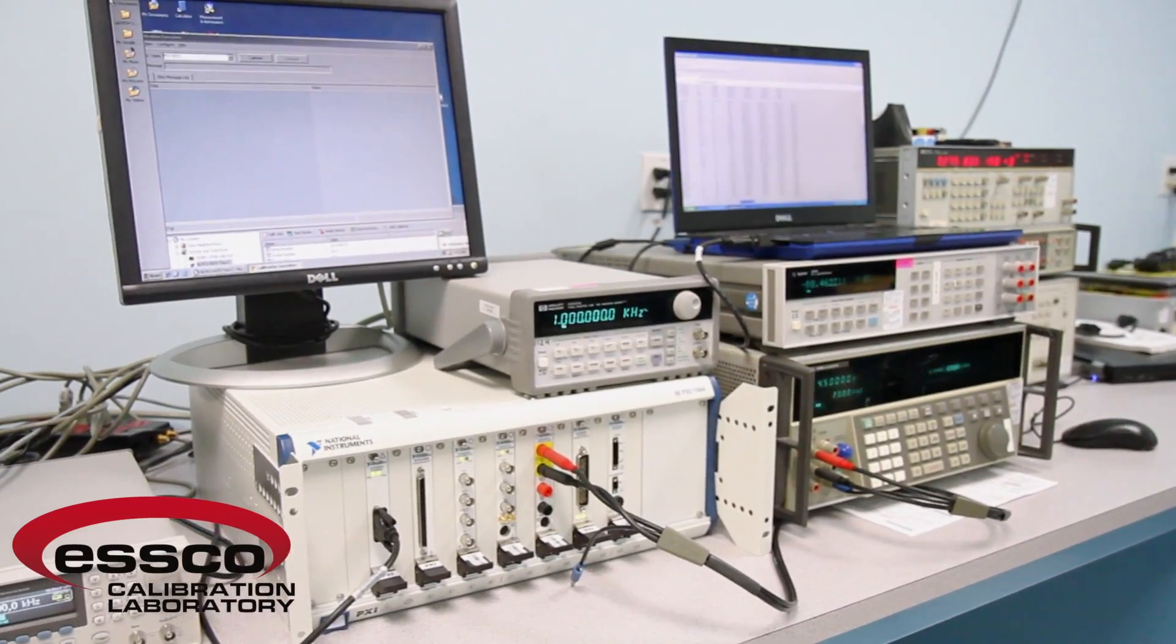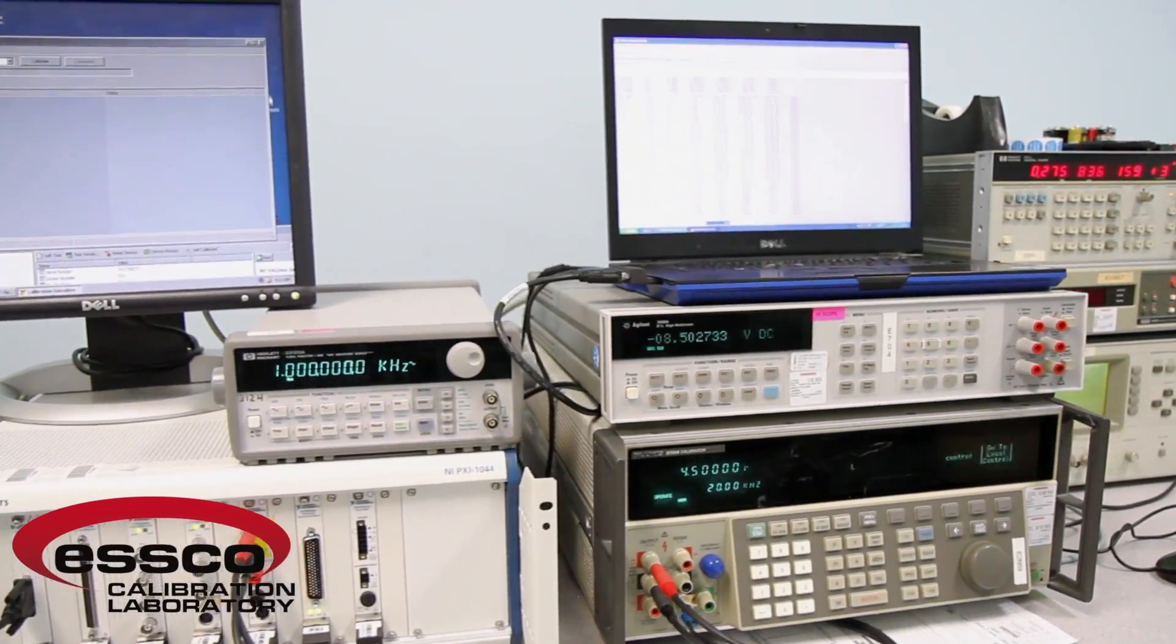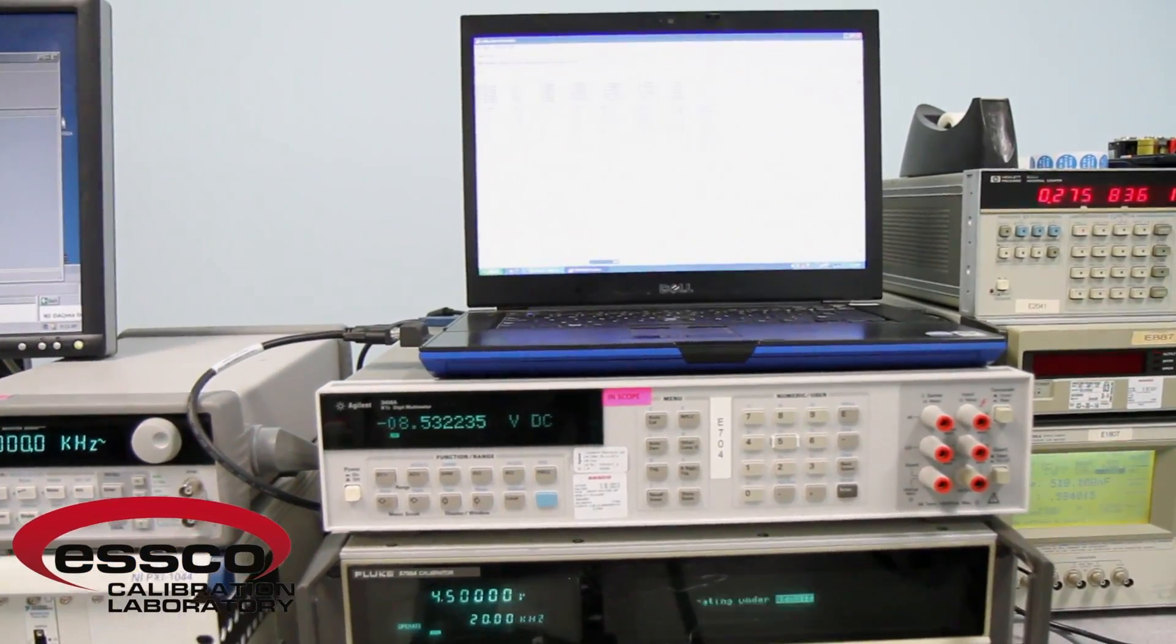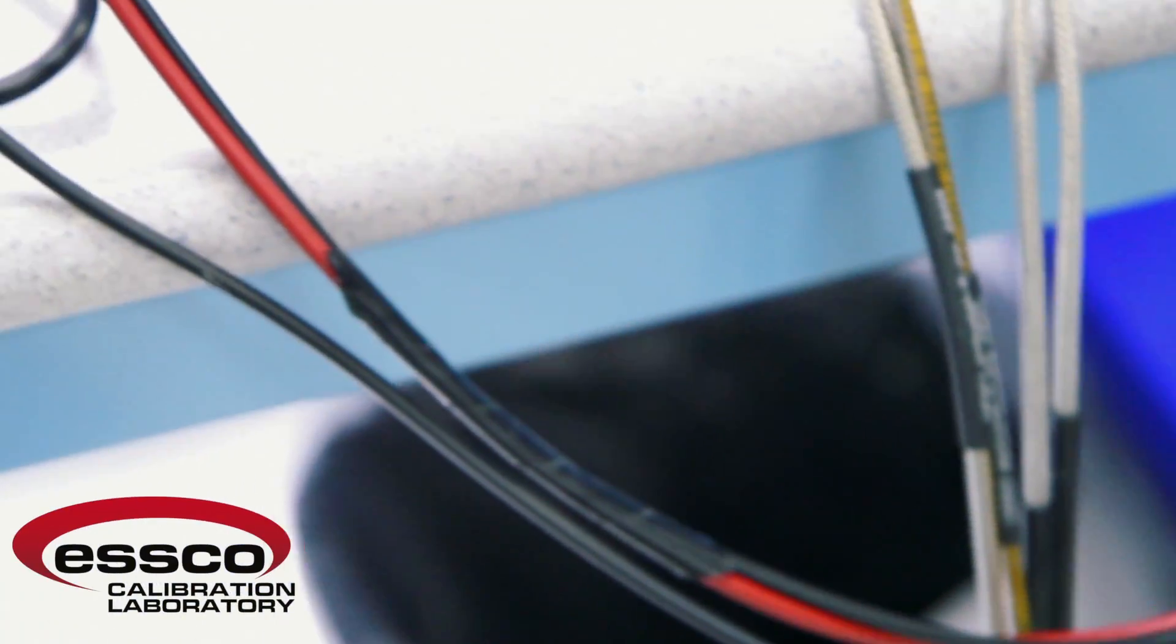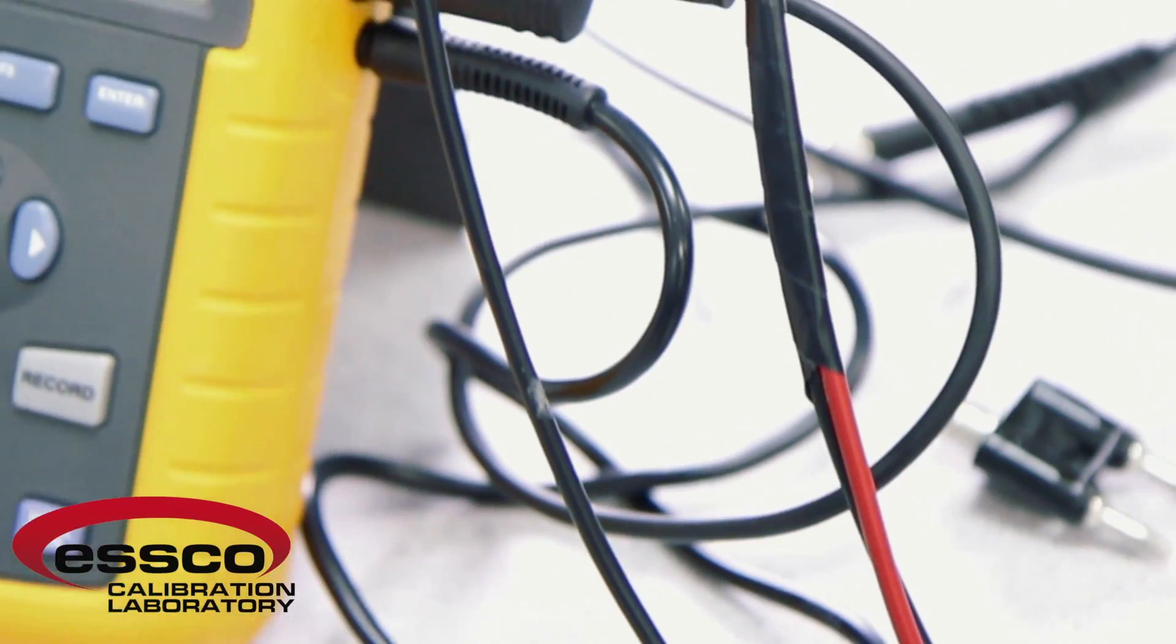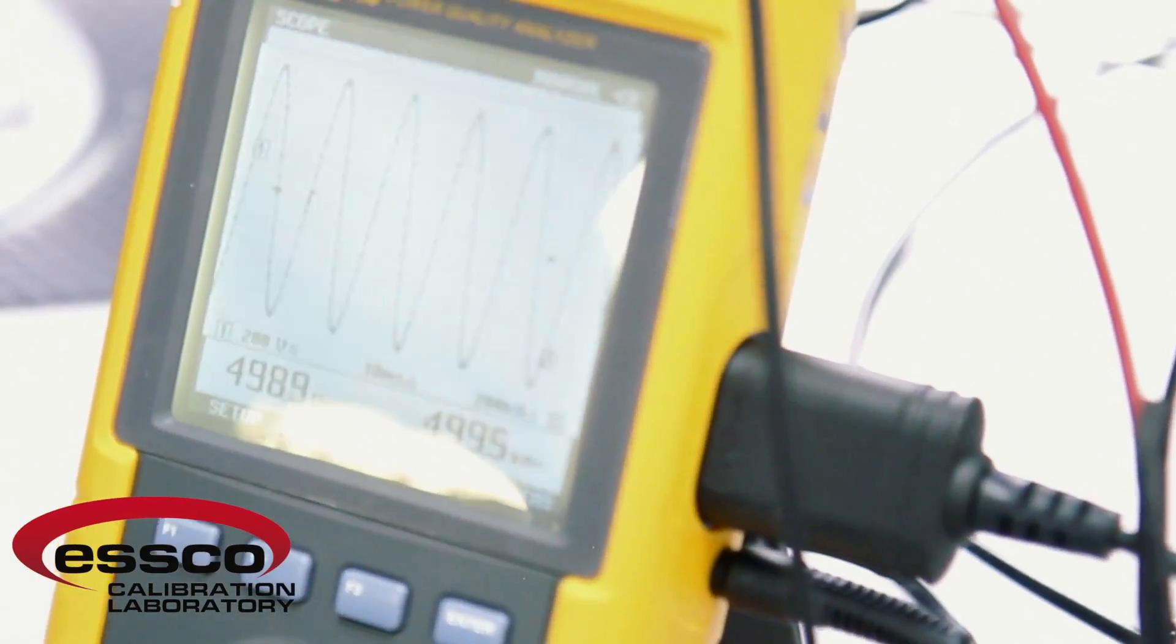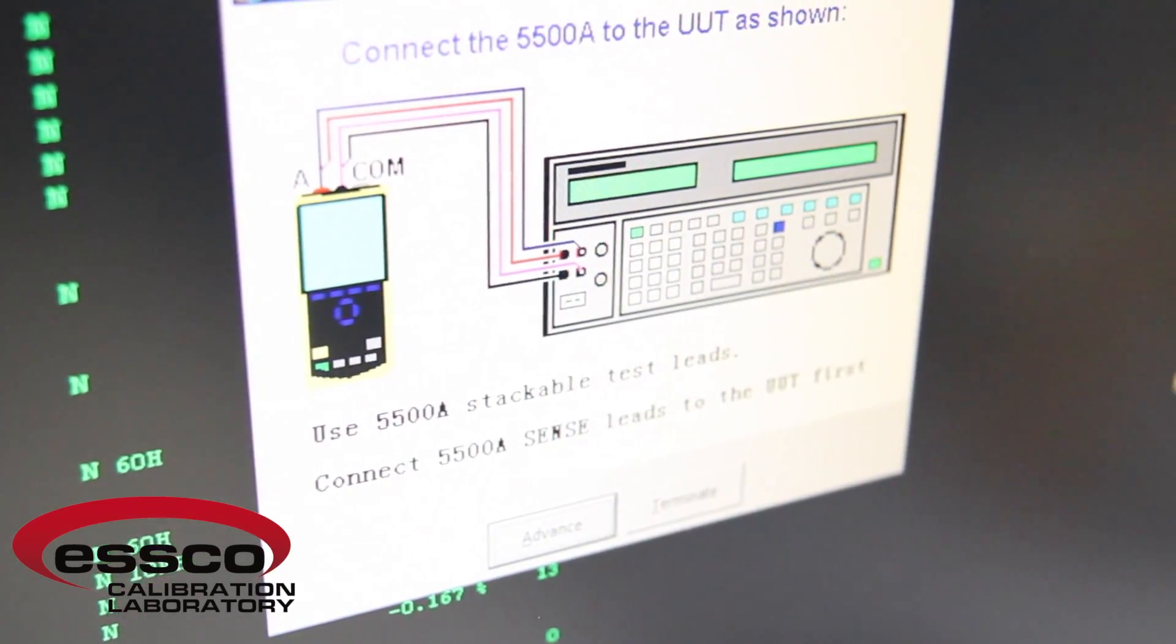After the calibration has been completed, a report documenting your calibration and adjustment results is provided. For other electronic equipment calibrated in our lab, such as high-accuracy DMMs, oscilloscopes, and multifunction calibrators, we use the Fluke MetCal program.